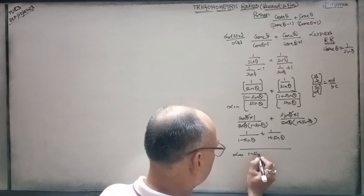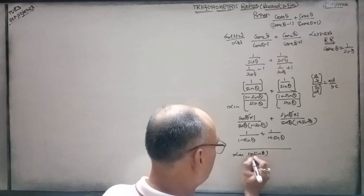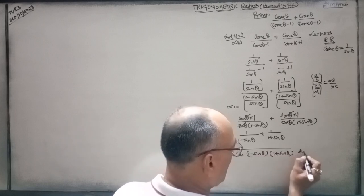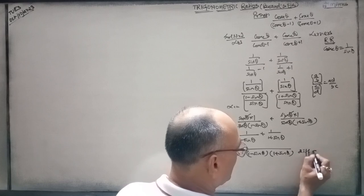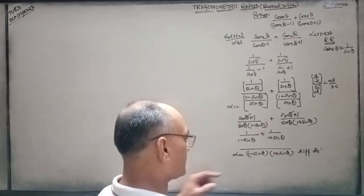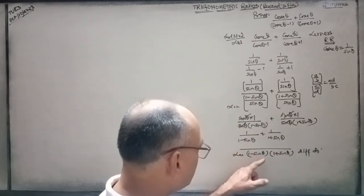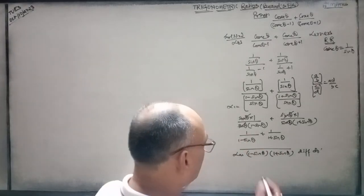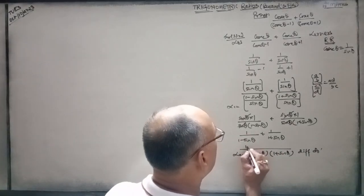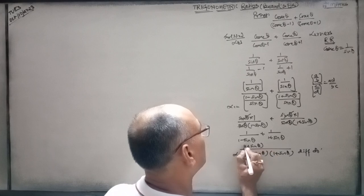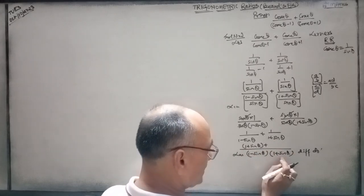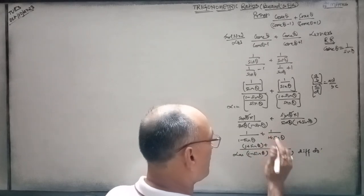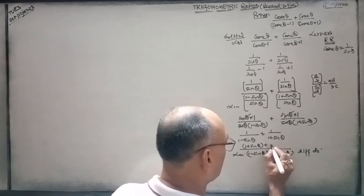LCM here is one minus sine theta into one plus sine theta, since we have different denominators. So it goes like cross multiplication: one minus sine theta stays, one plus sine theta goes up and multiplies with this one. And one plus sine theta — the remaining goes up and multiplies with this one.